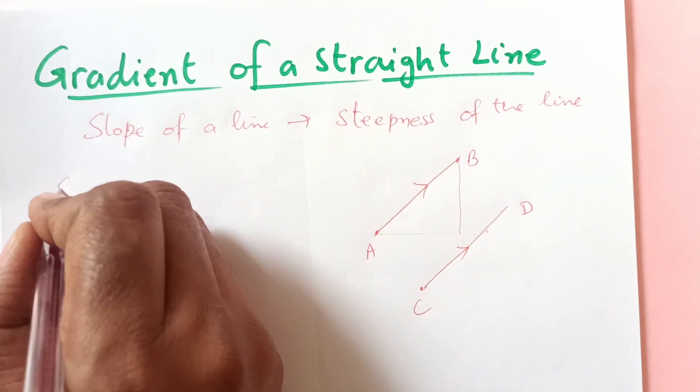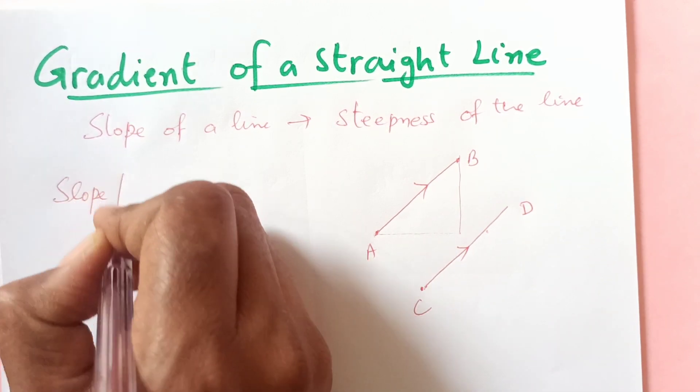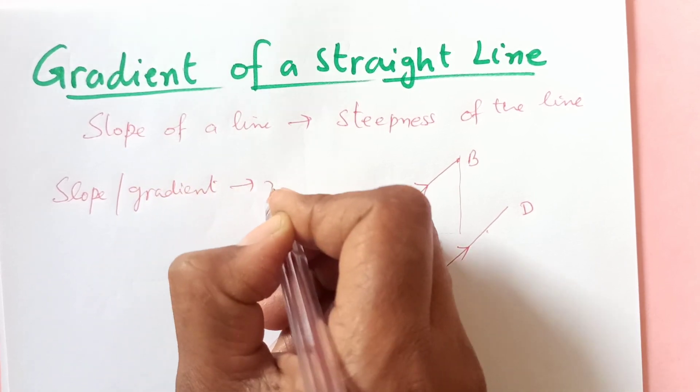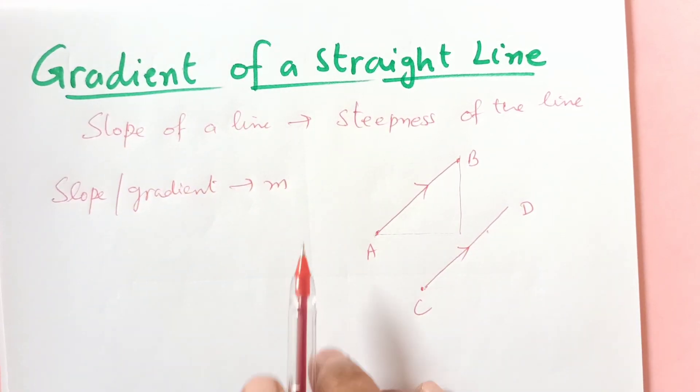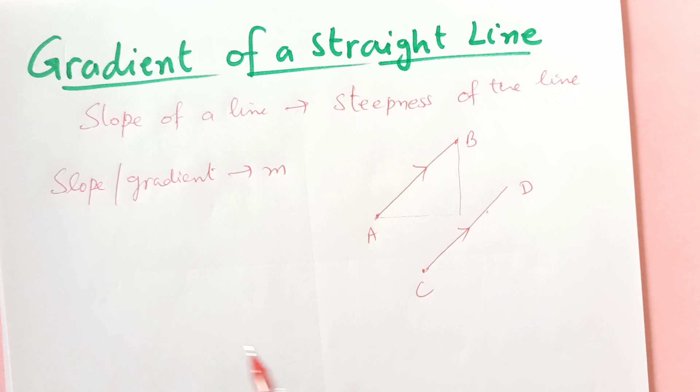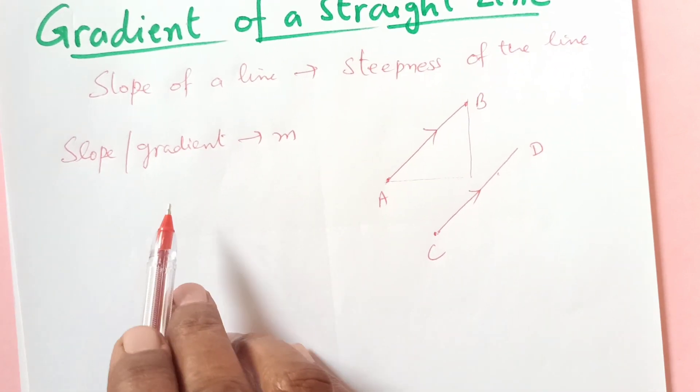So usually we denote the slope or the gradient by M. We use M as the symbol for gradient. Now if we have the coordinates, how to find out the gradient?